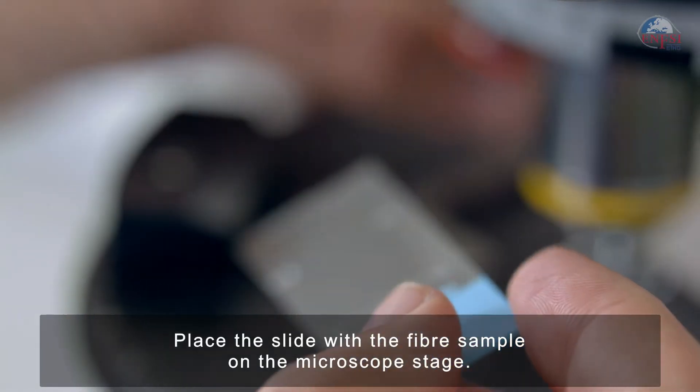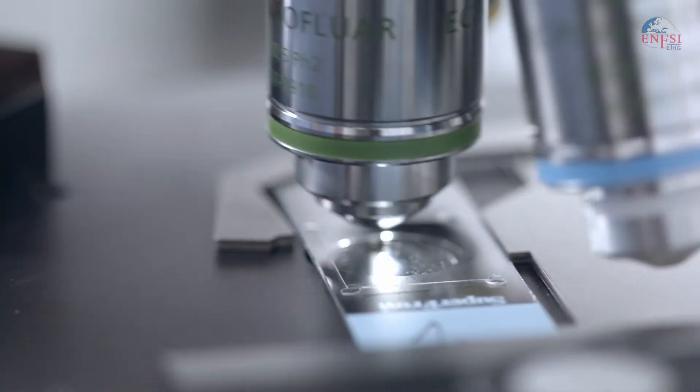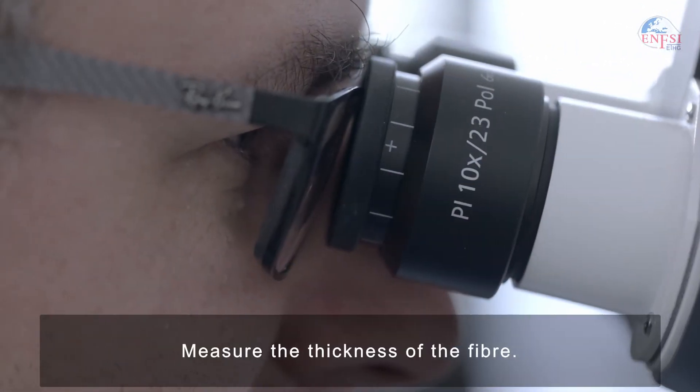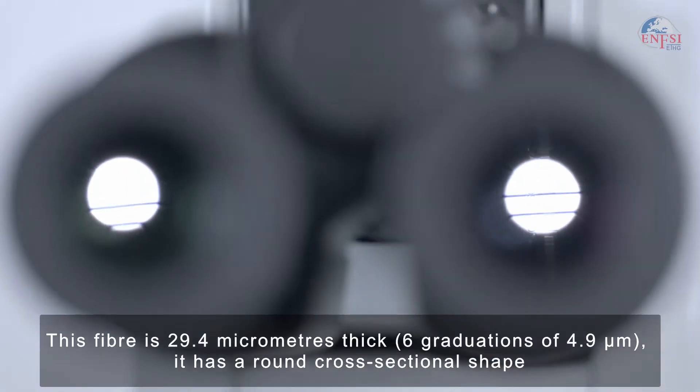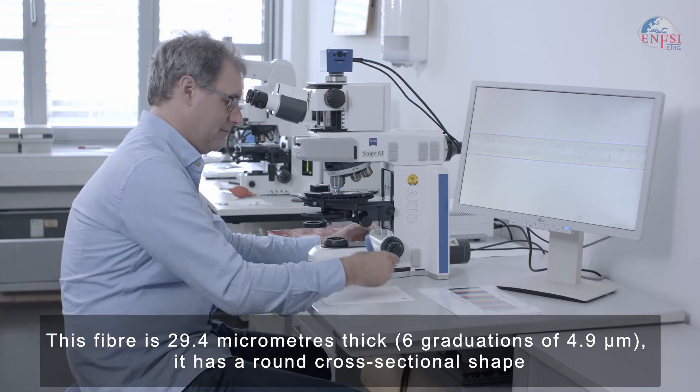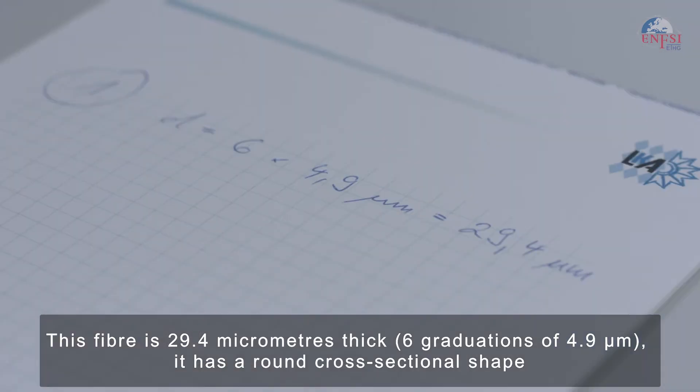Place the slide with the fiber sample on the microscope stage. Initially, you have to measure the thickness of the fiber. This fiber is 29.4 micrometers thick, 6 graduations of 4.9 micrometers, and it has a round cross-sectional shape.